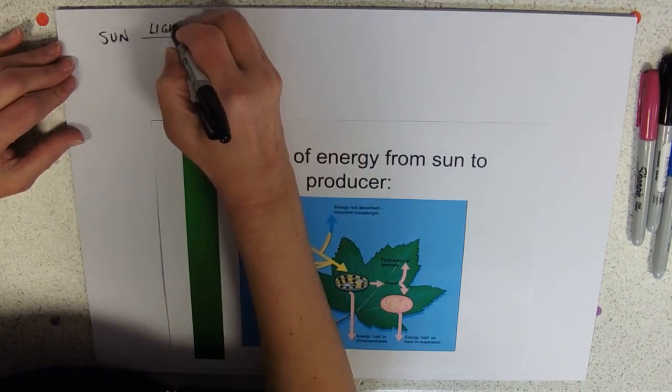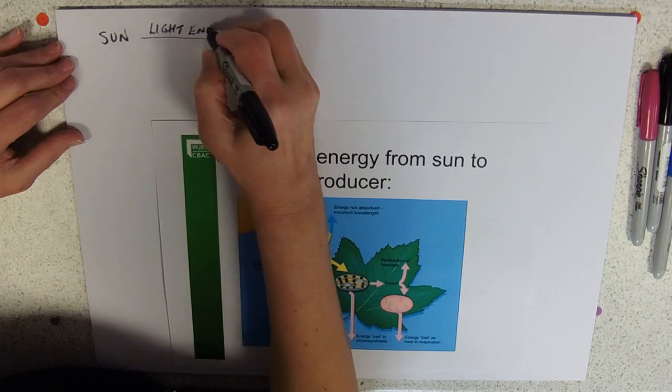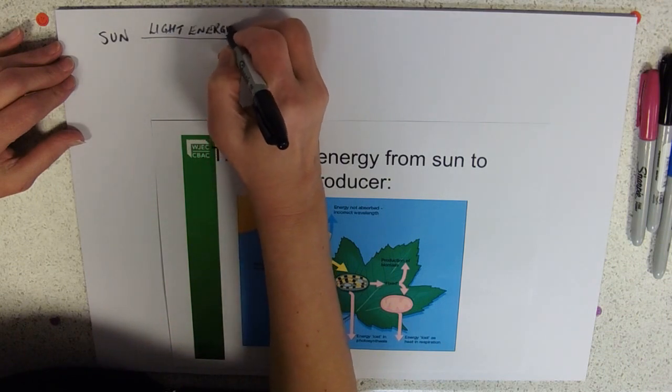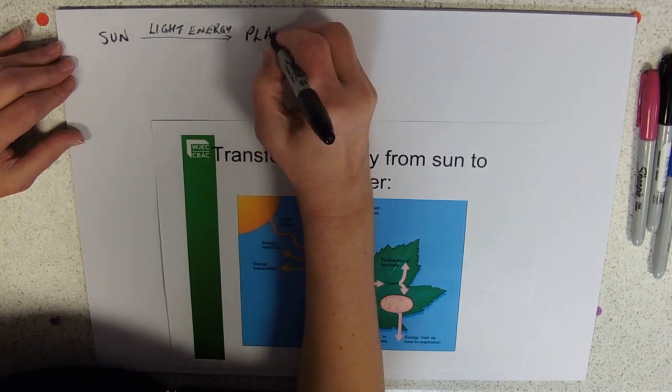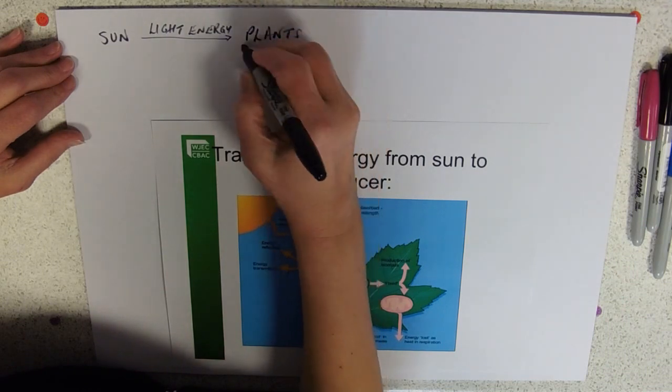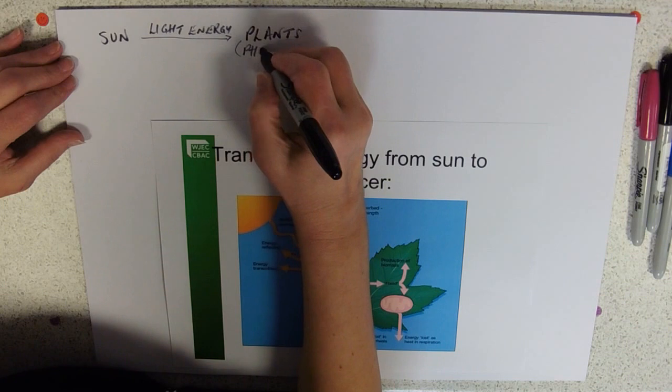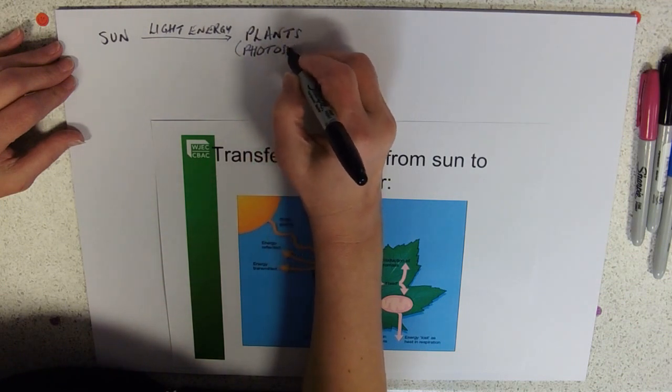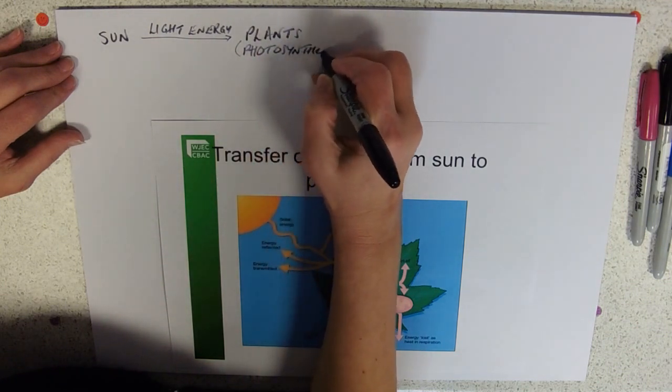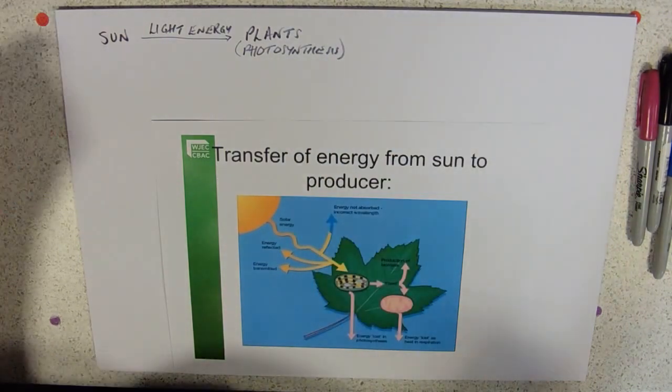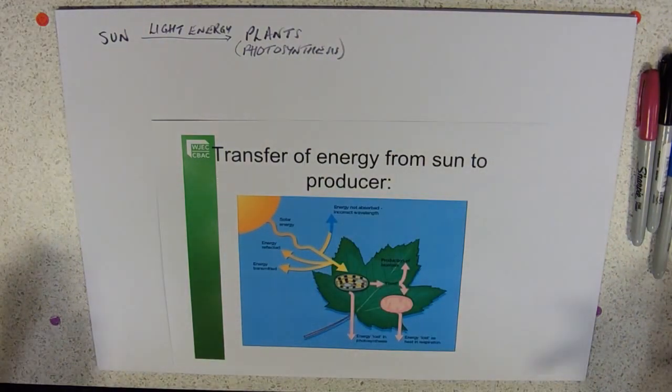This provides light energy that's transferred to plants, which fix it by the process of photosynthesis. Obviously we know absolutely everything there is to know about photosynthesis. There's nothing left.